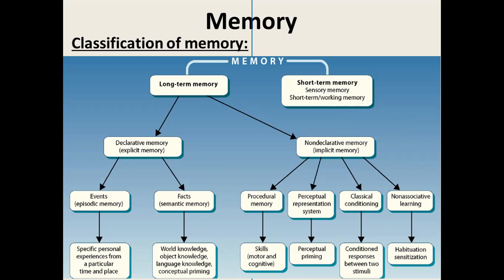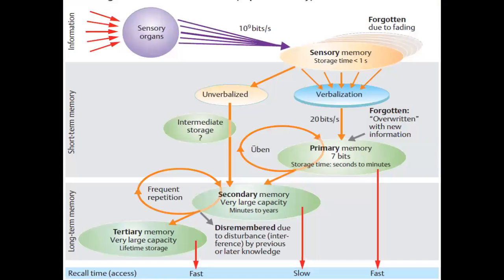Let us see how the brain converts information into short-term and long-term memory and how it can be assessed. All your sensory organs receive information and send it to the cortex. If the storage time is less than one second, it resides in sensory memory.